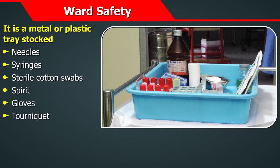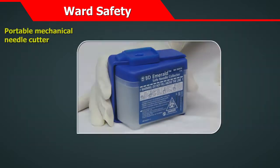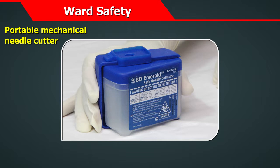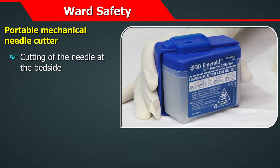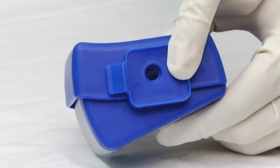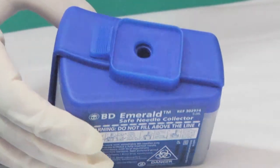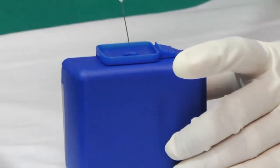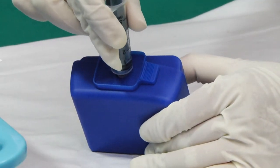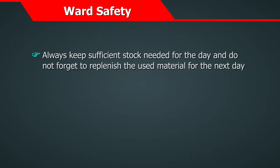An important component of the phlebotomy tray can be a portable mechanical needle cutter, which ensures cutting of the needle at the bedside and eliminates the dangerous practice of recapping or transfer of naked needles by hand. It consists of a sharp blade on the top, which can be exposed when the needle needs to be cut. The needle can be cut by pressing the two arms of the cutter together. Expose the blade, insert the needle into the hole, press the two arms together, and the needle is cut at the hub. The remaining syringe and hub can be discarded according to biomedical waste rules.